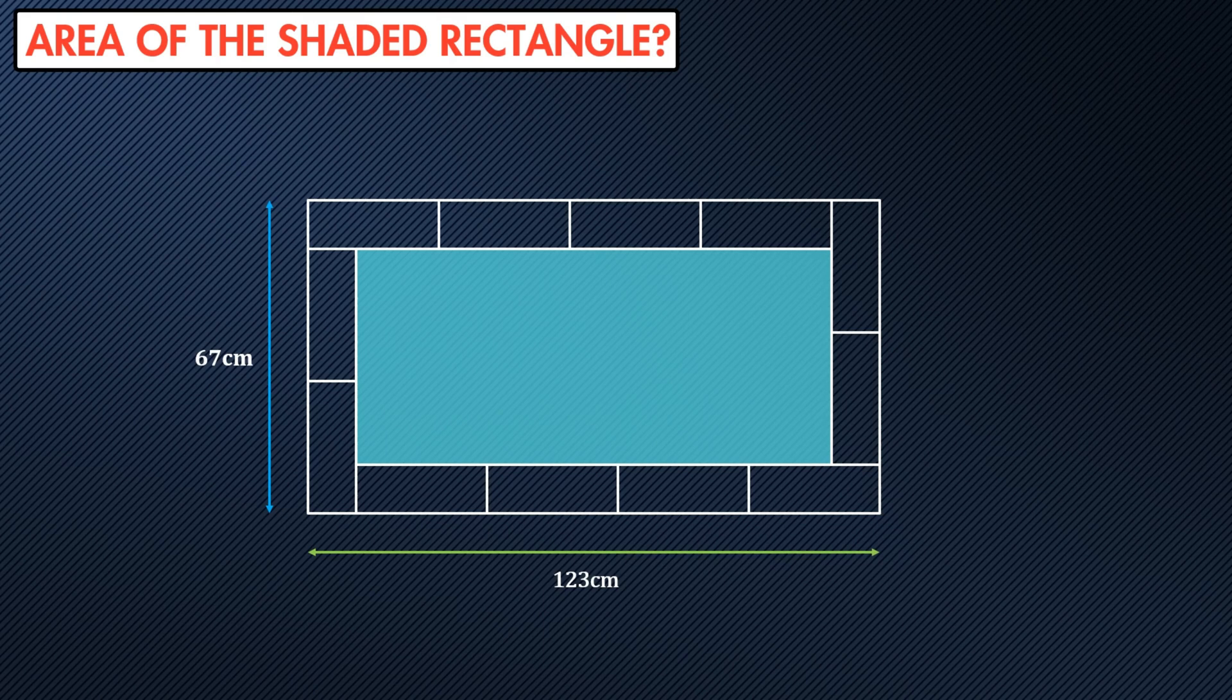Here we have another really nice question. We want to find out the area of the shaded rectangle, and we are given dimensions of 123 centimeters and 67 centimeters for the outer perimeter.